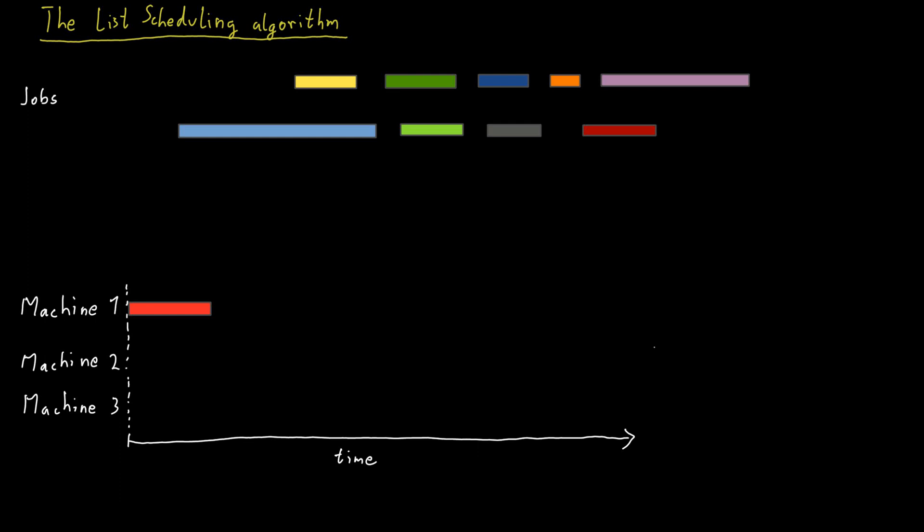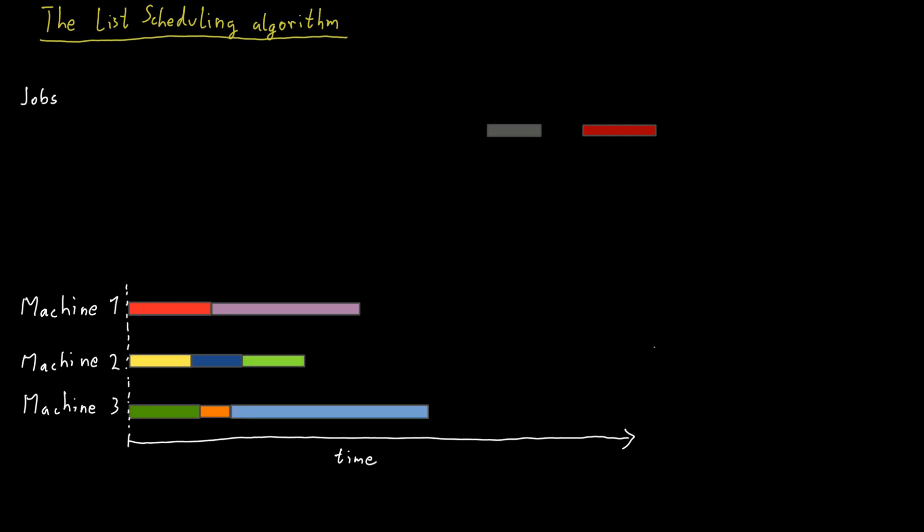The second job, when we try to allocate it, the second and third machines have zero load, so we can put it on either one of those machines. Let's say we put it on machine number two. And then the third job really has to go to machine number three because that now uniquely is the machine that has the lowest load. After we place the first three jobs, this just continues. The fourth job has to go to machine two and so on. We keep placing the jobs always on the machine that at that time has the smallest load among all the machines, and eventually we will have assigned all 10 jobs to machines in some way.